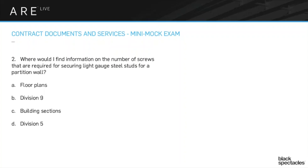Let's first talk about floor plans and building sections. If we're talking about something as detailed as the number of screws required for securing light gauge steel studs in a partition wall, that's a very particular, detailed piece of information. It's not a custom detail — it's a generalized detail for all partition walls. Where would you put that note on a floor plan? It just doesn't fit, and it would have to be called out on every partition.